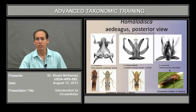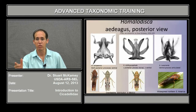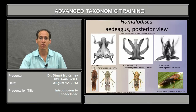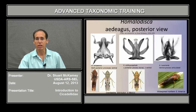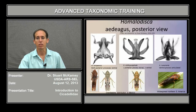Homalodisca lucinaria is a northern South America species that was recently intercepted from Mexico — we don't know if that's where it started — but it's definitely a species of concern because it's a vector of citrus variegated chlorosis in oranges in Brazil. It also has very distinct genitalia. It has a dorsal process, paradorsal processes, and the ventral process, you can see by the clear area here, is articulated with the rest of the aedeagus.